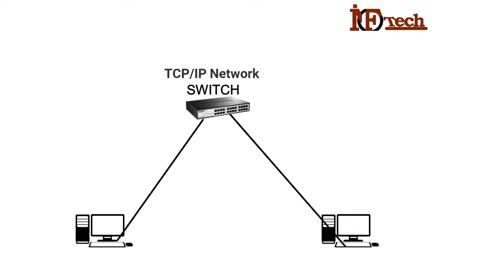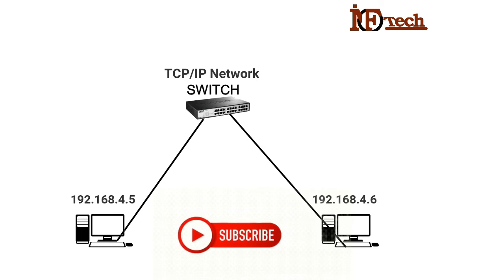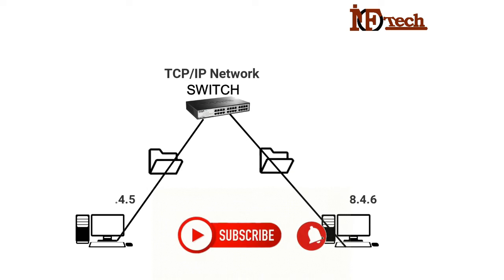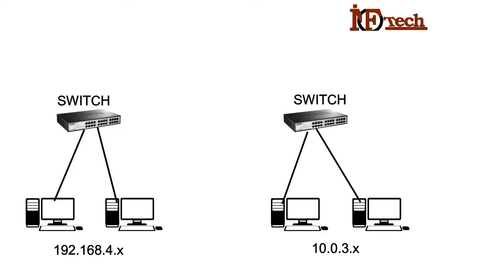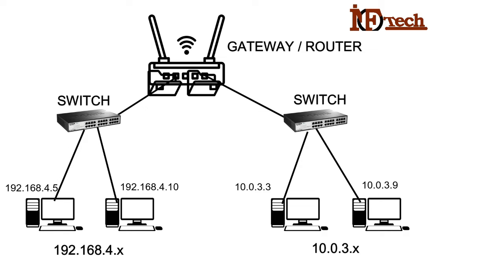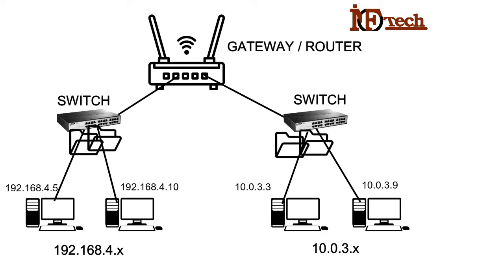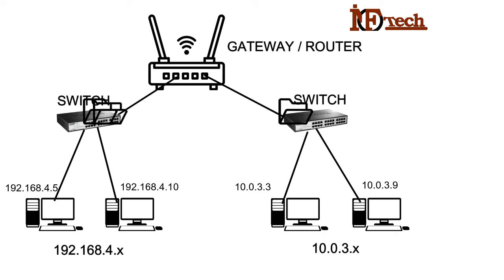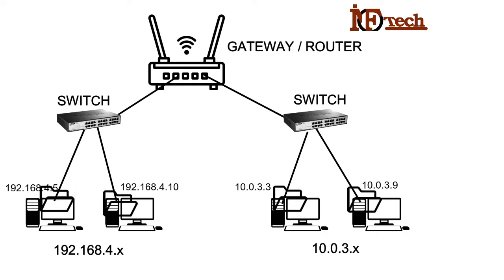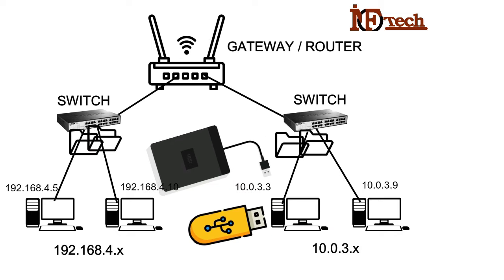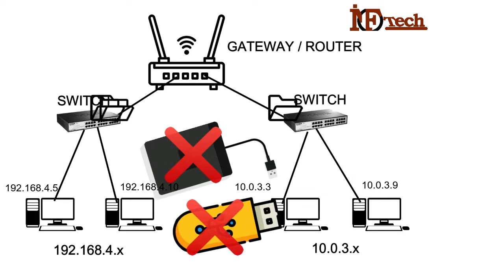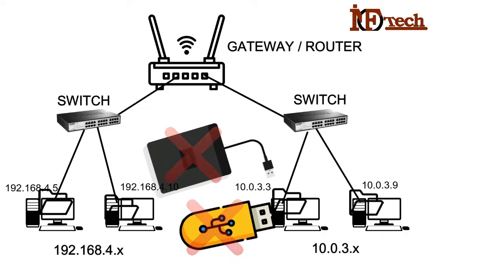A TCP/IP network is a network where we connect different PCs by assigning IP addresses of the same network to each PC for communication. All these PCs might be on the same network or on different networks. If distributed across different networks, we need to configure a gateway so all PCs can communicate. Communication here means transfer of data via Ethernet cable or Wi-Fi, not through USB or by directly attaching a hard disk.